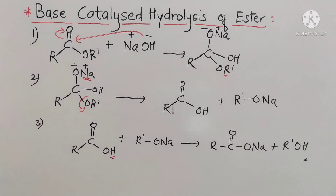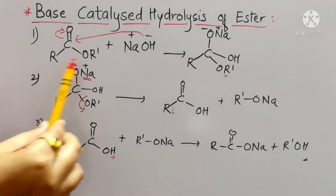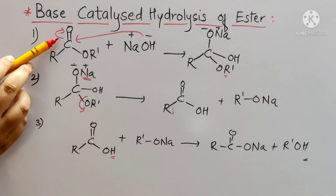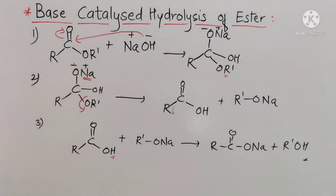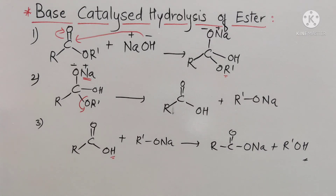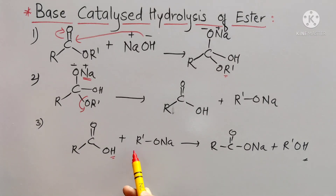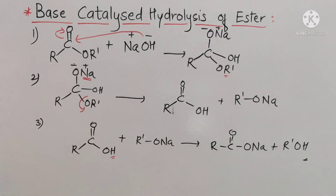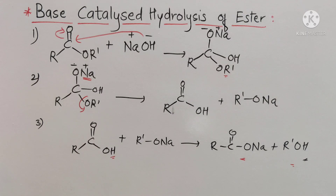So this is the mechanism for the base catalyzed hydrolysis of ester, and it takes place in three steps. The first step is nucleophilic addition of OH⁻ to the carbonyl group of the ester, forming a tetrahedral intermediate. The second step is elimination of the alkoxide ion, which is the acyl-oxygen bond fission. The third step is proton transfer: the alkoxide ion, being highly basic, immediately accepts the proton from the carboxylic acid, forming the sodium salt of fatty acid and glycerol. This mechanism and reaction is also called saponification, or base catalyzed hydrolysis of ester.